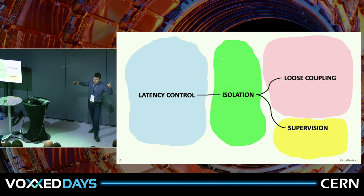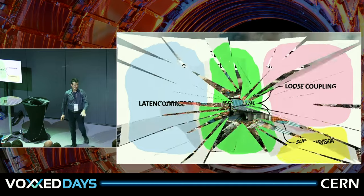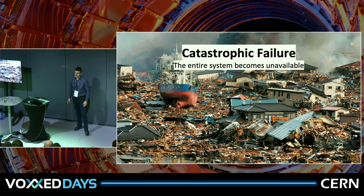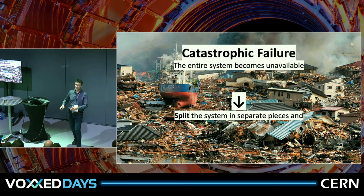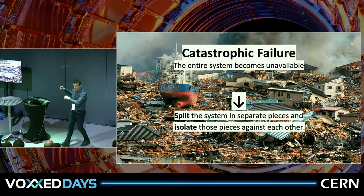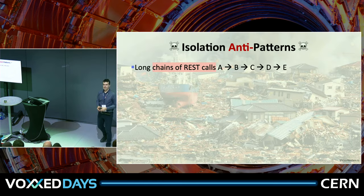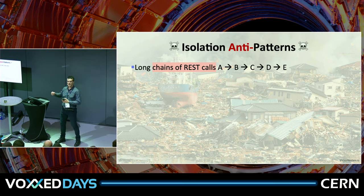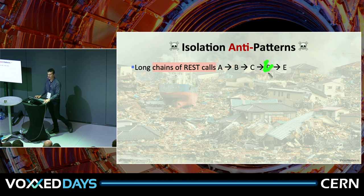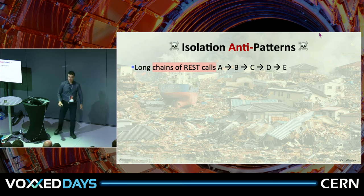We're going to study these patterns grouped in four categories: isolation, latency control, loose coupling, and supervision. Let's start with isolation and imagine a catastrophic failure in which every single endpoint in your system is down. You need to break your system into smaller pieces and isolate those pieces against each other. Some developers were very happy to use REST — REST calling other services calling other services, five hops deep. A long chain of REST — any failure anywhere can blow up the whole thing, any delay ripples upstream. This is a terrible, fragile architecture — some call it a distributed monolith.